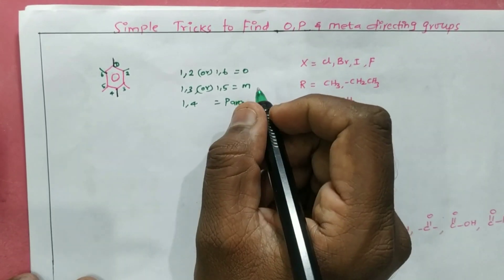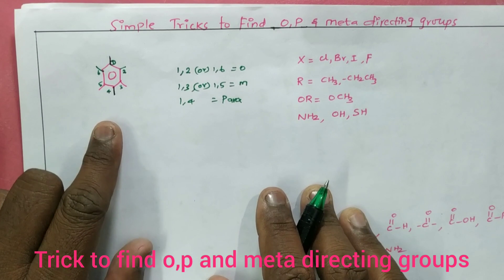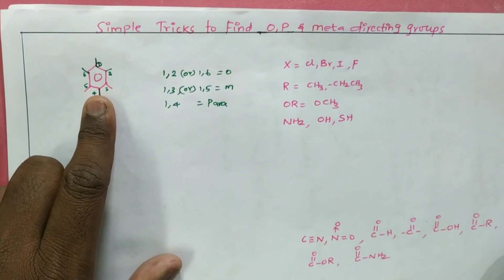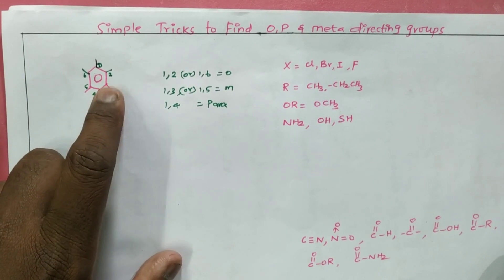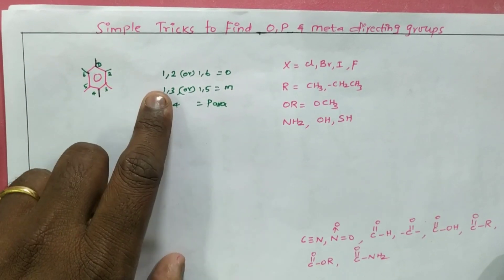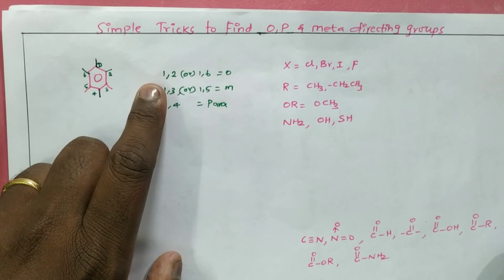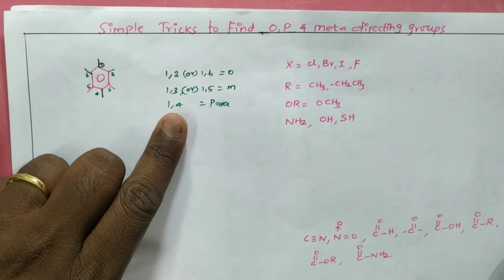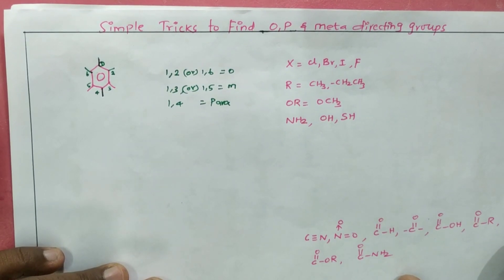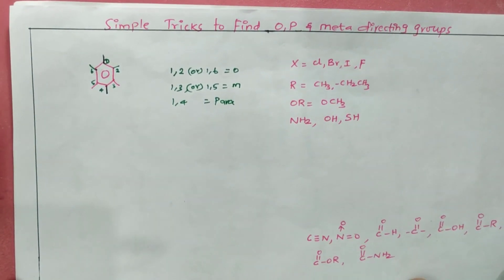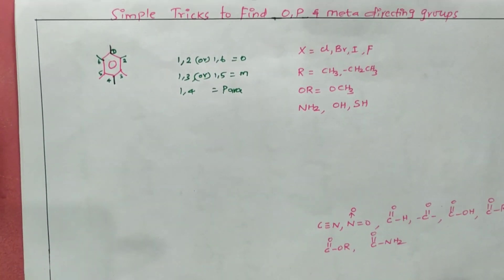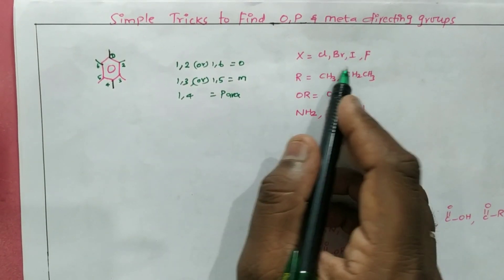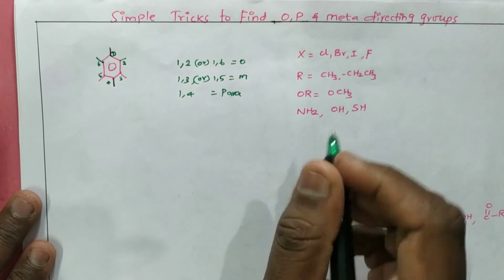If benzene has only one substituent there is no problem, but when another substituent comes to attack and occupy another position, we have to determine carefully whether it goes to the ortho, meta, or para position. Before getting into the trick, we need to understand what directing groups are and how they direct.